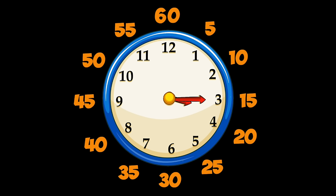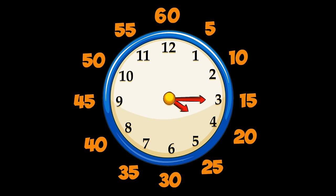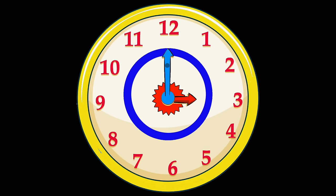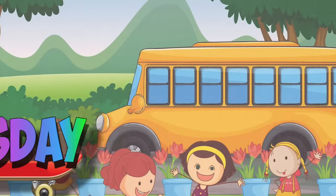So 3:15 is when the long hand is pointing to the 3 and the small hand has moved a little past the 3. If we were to show 4:45, we start at 4 o'clock — the big hand on 12 and the small hand on the 4 — then count by fives: 5, 10, 15, 20, 25, 30, 35, 40, 45. You can see that 45 is at the number 9. That's 4:45. Can you use a learning clock to make some of your favorite times of the day?